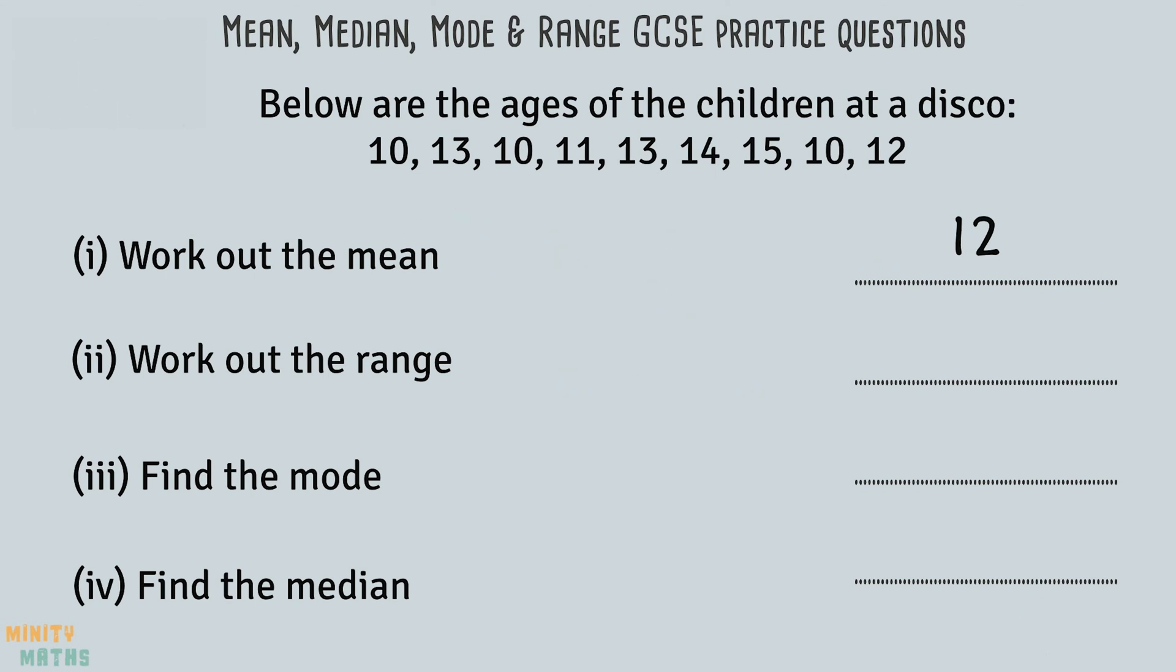To work out the range, we need to find the difference between the highest age in the group, which is 15, and the lowest age, which is 10. To do this we take 10 away from 15, and the answer is 5.